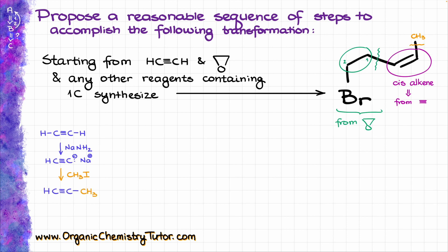Once I have this intermediate, I'm going to deprotonate it again and treat it with epoxide to add my two-carbon fragment. So step number one is NaNH2 again, and step number two is the reaction with the epoxide, followed by acidic workup to protonate everything that needs to be protonated, which is going to give me an intermediate with a triple bond and the OH group on the second carbon away from the new bond that I have just formed.